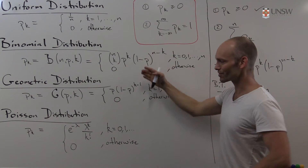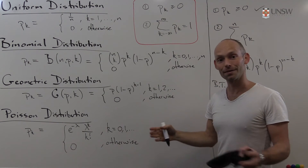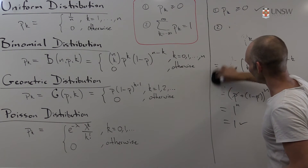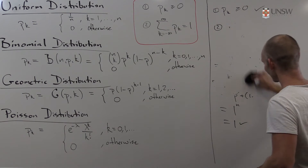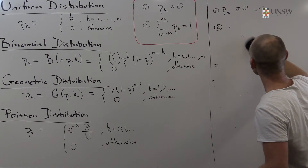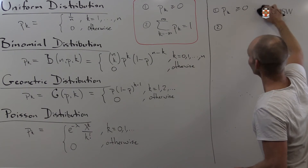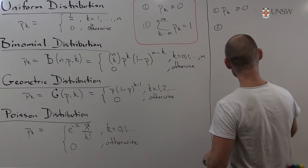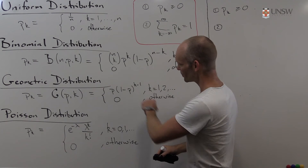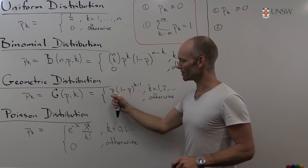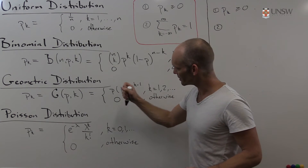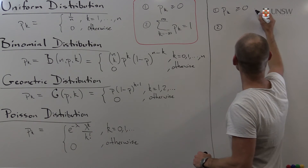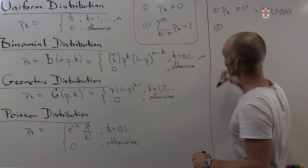Now we only have to do the geometric and the Poisson distribution in exactly the same way. Let's go on to the geometric distribution. We look at the function — it's either 0 or something that depends on p, which, just like in the binomial distribution, is a probability between 0 and 1. So this is non-negative. 1 minus p is also non-negative, and so is any power of it. All of this is non-negative, and the first condition is satisfied.